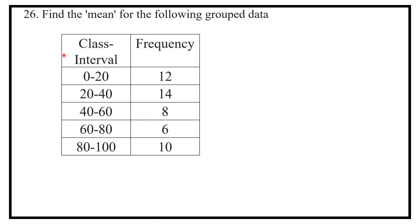In the question, we have to find the mean of the following grouped data. We know that mean is equal to sigma fi xi upon sigma fi.